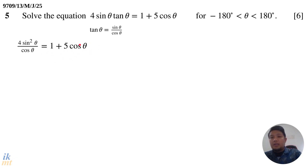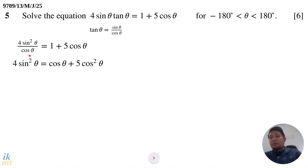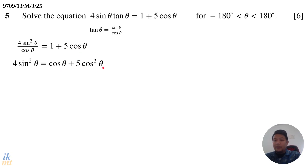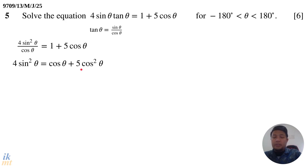The right-hand side remains the same. The next thing we can do is get rid of the fraction by multiplying both sides by cosine theta. When we do that, we get 4 sine squared theta equals cosine theta plus 5 cosine squared theta. Notice that we now don't have any tangent — we only have sine and cosine, and no fractions.